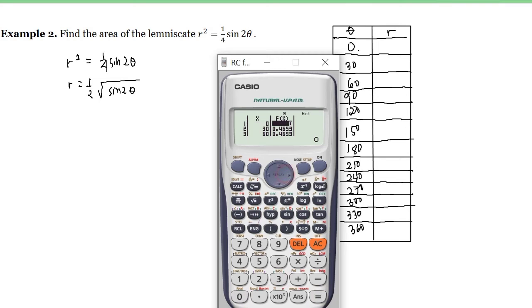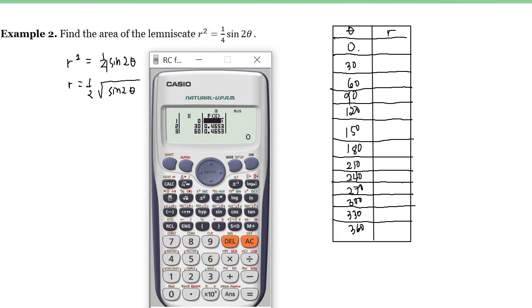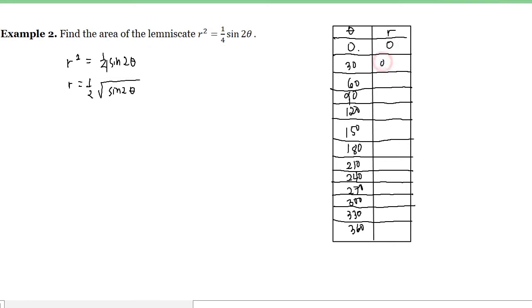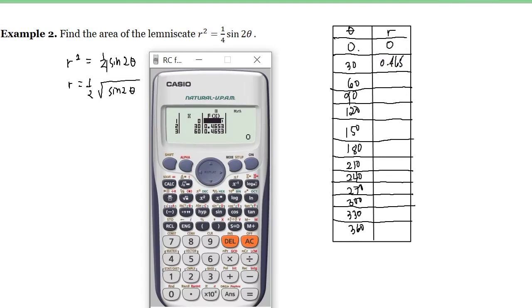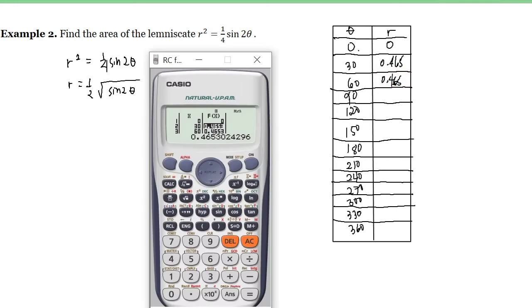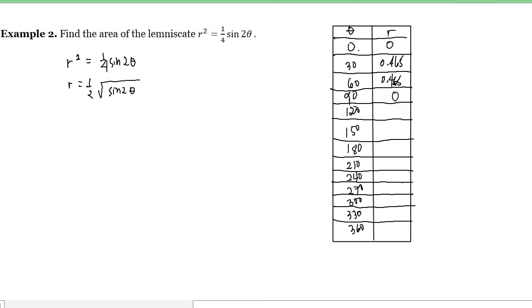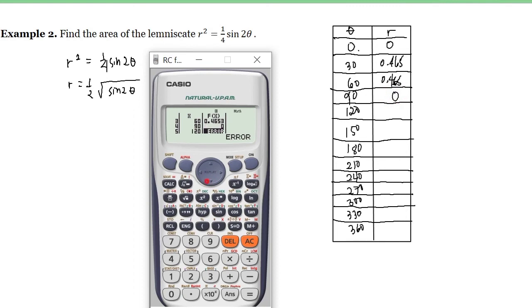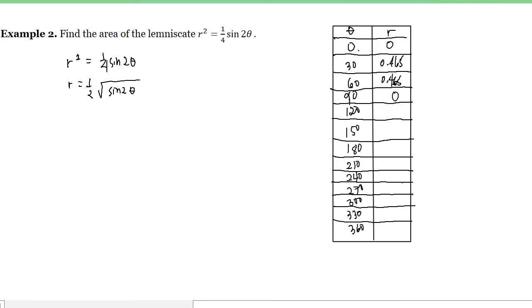So these are now our coordinates. So 0,0 then 0.465. So we have here 0,0 and 0.465. And this is at 60, we have 0.465 also. And we have 0.465 at 60, and we have 0 at 90. And for the 120 you have error. Error means we have no graph there. And we have 180, that is 0.